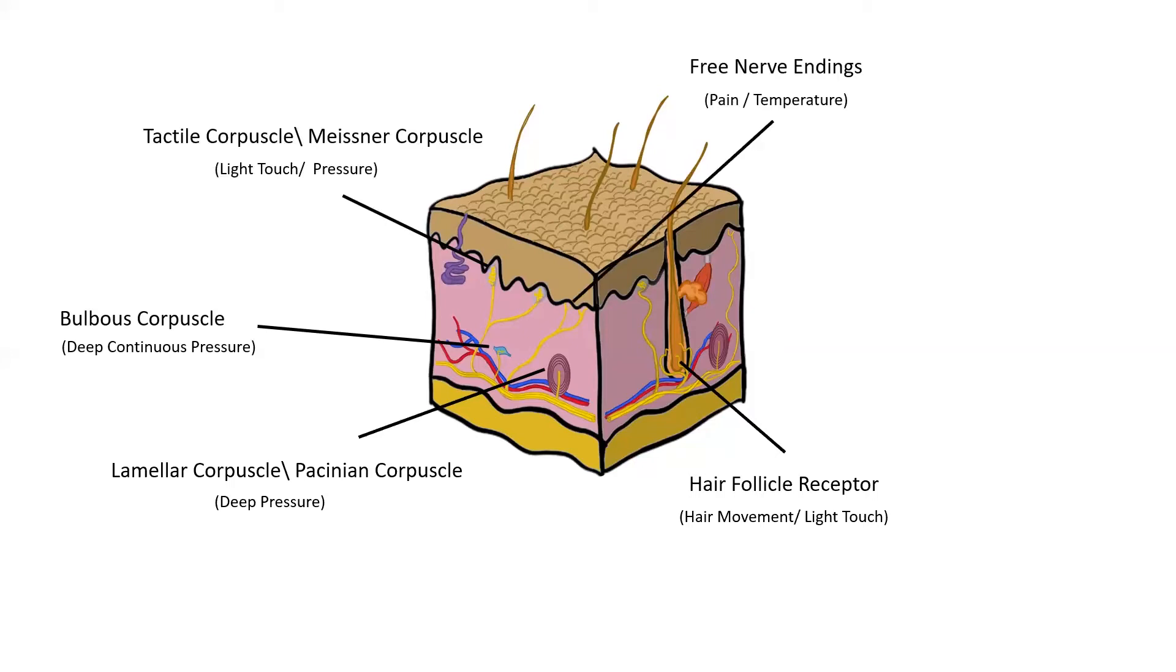And then we have free nerve endings. And free nerve endings are more responsible for pain and detecting temperatures. So there's different types of free nerve endings. With temperature, a lot of those can adapt pretty quickly. But receptors like the pain receptors or the pain free nerve endings, they don't really adapt that quickly, which really makes sense to their function.